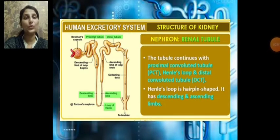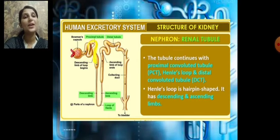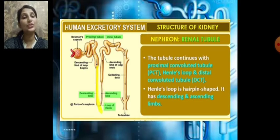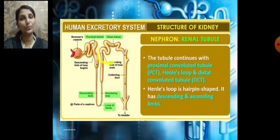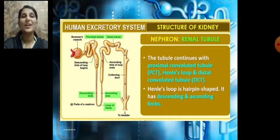The Bowman's capsule, which is the initial part of the renal tubule, continues to form the PCT — the proximal convoluted tubule. It then goes down to form a U-shaped bend called Henle's loop, which is divided into a descending limb and an ascending limb. It then continues to the distal convoluted tubule, or DCT. So the parts of the renal tubule are: Bowman's capsule, PCT, Henle's loop, and DCT.